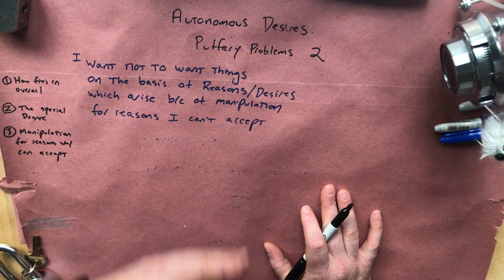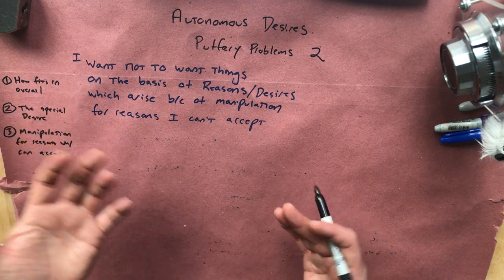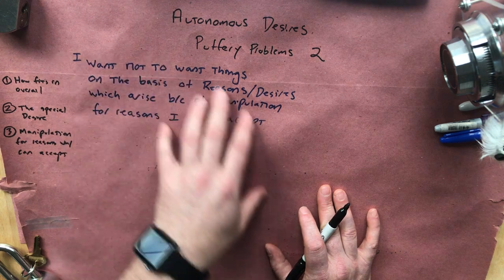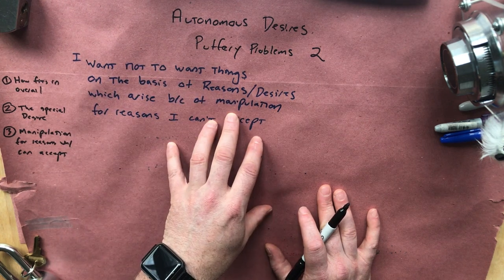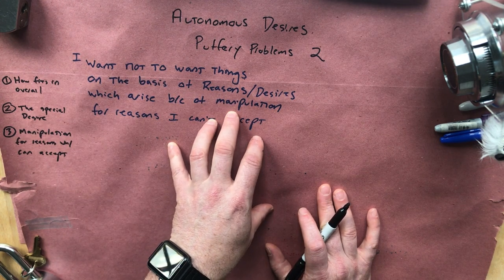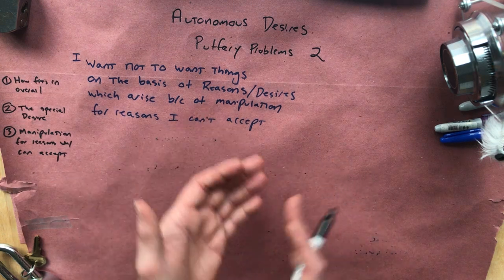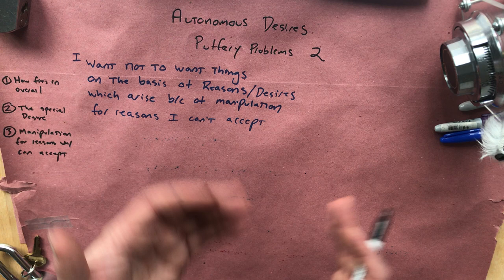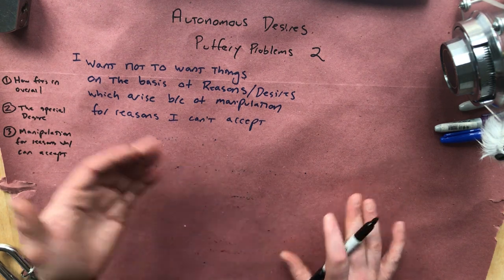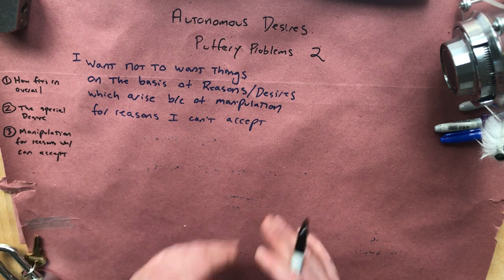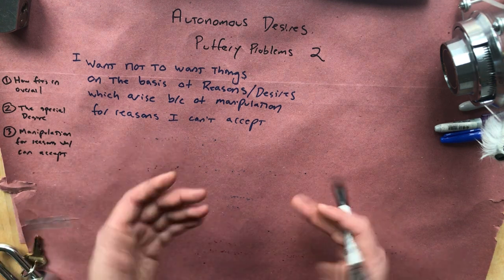So you might think that you could make that move with the Carl's Jr. one. You find yourself with the desire to go to Carl's Jr. because you've seen this ad. And you could ask yourself, well, do I really want to go to Carl's Jr.? I mean, maybe you know the reason. Maybe you're not misled about thinking that it's just a desire for the hamburgers. You're like, yeah, that was kind of lame that they tricked me in this way, but I'm hungry. I want a hamburger. Couldn't I decide that I want to go? Well, that's where the second move comes in.